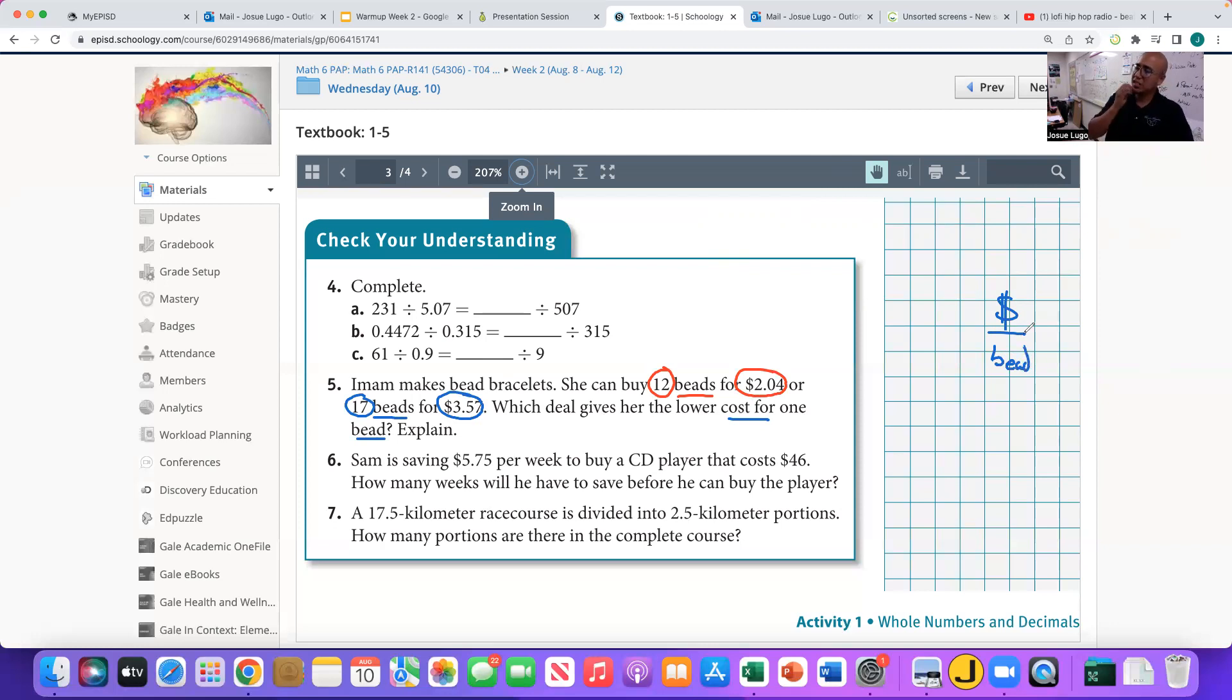Notice, isn't this a fraction? And doesn't fraction mean division? In other words, we have two division problems right here. One of them, our cost is, again, cost is going to be the first number of the numerator, $2.04 for 12 beads, and the other is going to be $3.57 for 17 beads.